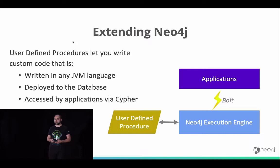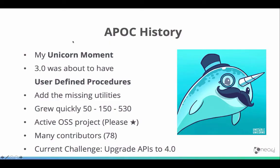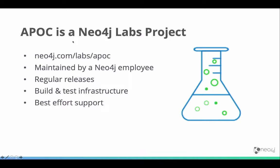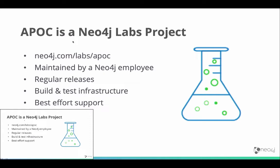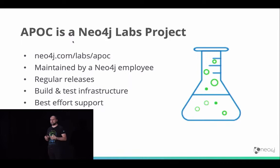APOC itself was my own unicorn moment. Neo4j 3.0 came out and added user-defined procedures, which I found a really cool opportunity to add missing utilities and functionalities to Cypher. We started initially with 50 functions and 50 procedures at the start of Neo4j 3.0, but it grew really quickly — to 150, and now we have 530 user-defined procedures, functions, and aggregation functions in APOC. It's a very active open source project with 78 contributors as of yesterday and almost 1,000 GitHub stars. Neo4j APOC is a Neo4j Labs project, maintained by us with the guarantee that someone from Neo4j is co-maintainer.